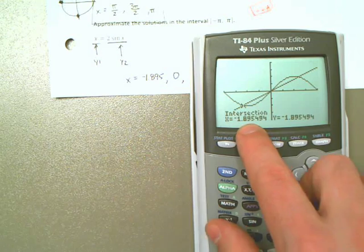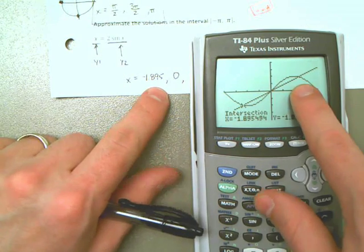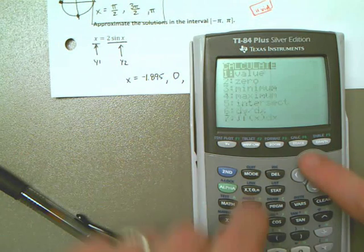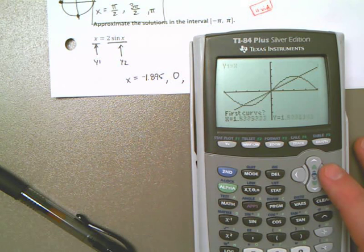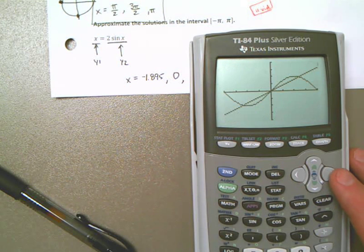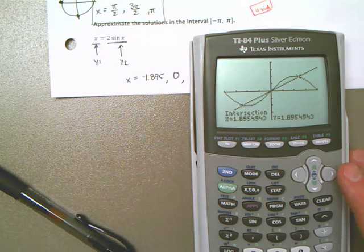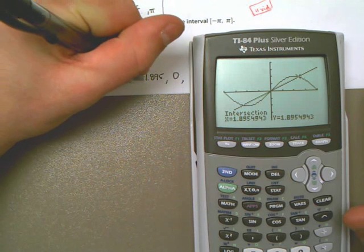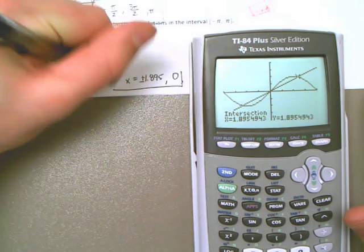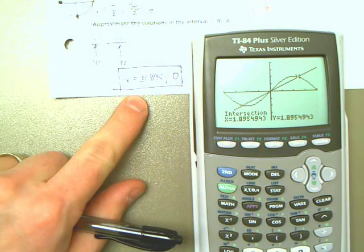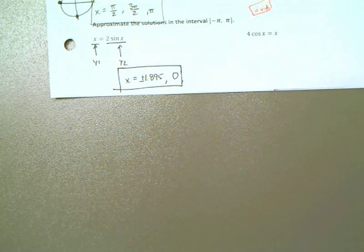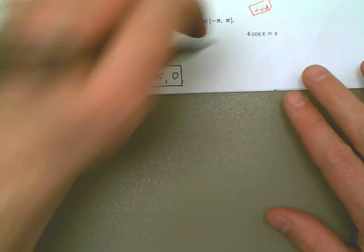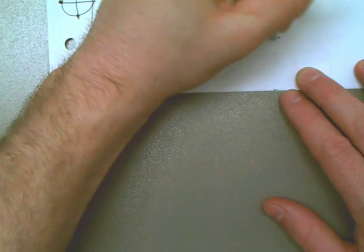And it tells me the first solution is at negative 1.895. So let's say, I don't know, three decimals. That would be good enough. That's an approximation. My second one is at zero. The third solution is over here. So I'm going to do it one more time. Second, calculate, find the intersection. And I just need to scroll to the right until I get around that intersection point. I hit enter. And it looks like the second one has, oh, look at that, 1.895. So you know what I'm going to do? I'm going to write this as plus or minus. And that will get both of them out of the way. There are the three solutions, plus or minus 1.895 and zero.